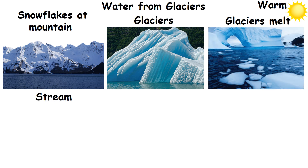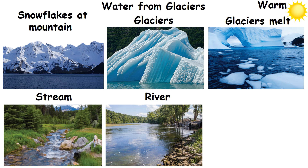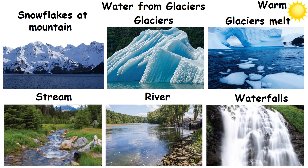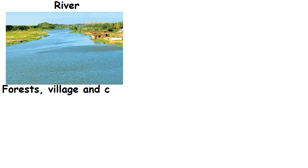Many water drops join together to form small streams. Many streams join together to form a river. Sometimes rivers or streams flow down as waterfalls. The river continues its journey across forests, villages and cities.